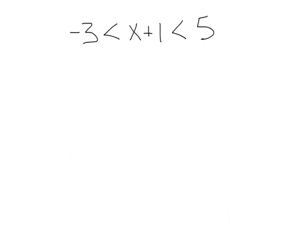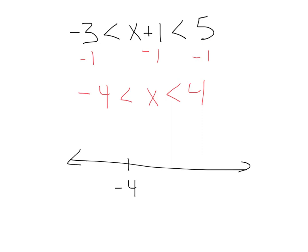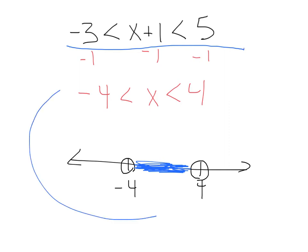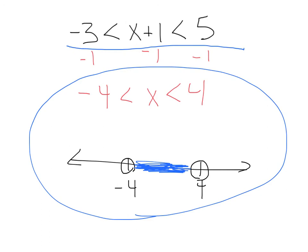I just have to do one quick example of the in-between type. This is x plus 1 is in between negative 3 and 5. First, let's solve: subtract 1 from each side, giving us negative 4 is less than x is less than positive 4. Instead of graphing individually, since we already know it's in-between, we can give the answer right away: negative 4 and 4 are our important numbers, both open dots since neither has equal to, and we shade everything in-between. In-between problems always just cover the region between your two important numbers.